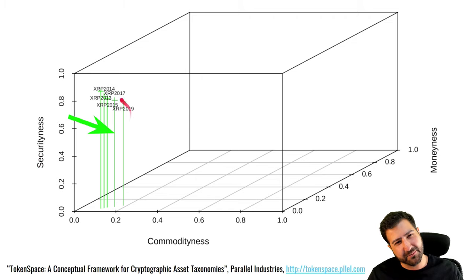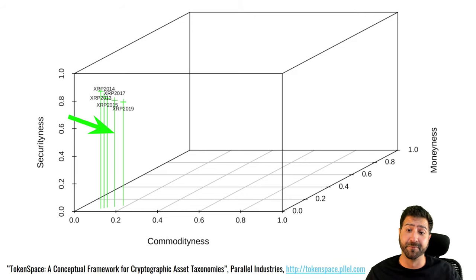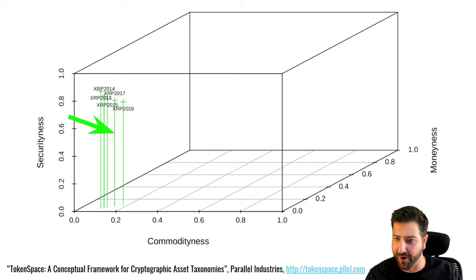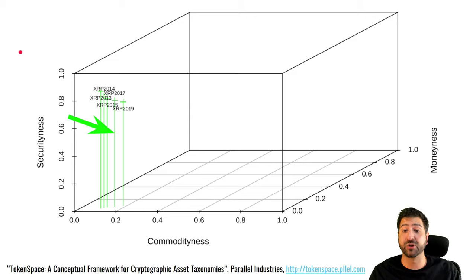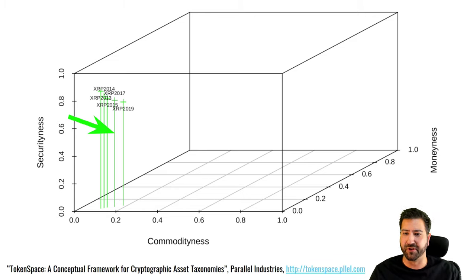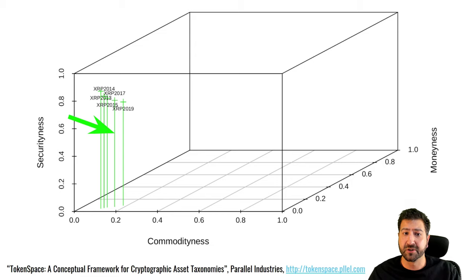XRP doesn't seem to have changed very much, which is borne out by the lack of development and additional functionality. The original Ripple coin actually had more functionality than XRP — XRP was meant to be the fee currency to attach a file to the Ripple network, paying one XRP per upload. It's even lost that functionality. It has very high securitiness: Ripple Labs holds huge amounts of the supply and sells that on the open market, raising questions under securities laws.